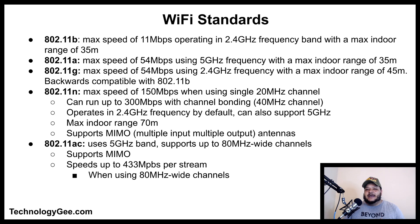The 802.11n can run up to about 300 megabits per second when implementing channel bonding using the 40 MHz channel. It operates in the 2.4 GHz frequency by default but can also support 5 GHz. The 802.11n has a maximum indoor range of 70 meters and supports MIMO — multiple input multiple output — antennas to improve performance and range, although not all devices include multiple antennas.